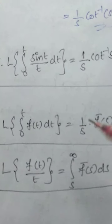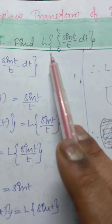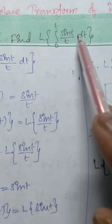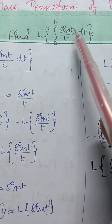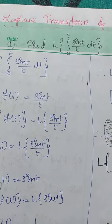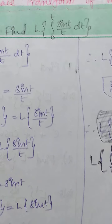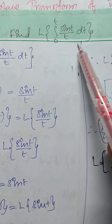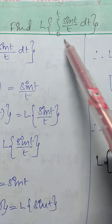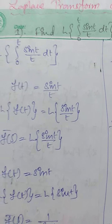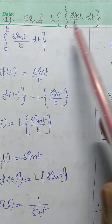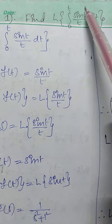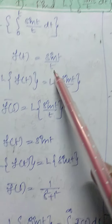Let us discuss one problem. Find the Laplace transform of ∫₀ᵗ (sin t / t) dt. In this problem we have two parts: first, the Laplace transform of an integral of a function, and second, the Laplace transform of division by t. We must first find the Laplace transform of sin t divided by t. The function here is f(t) = sin t / t.